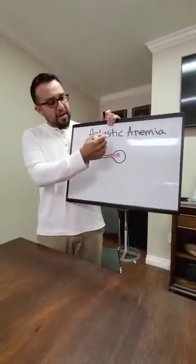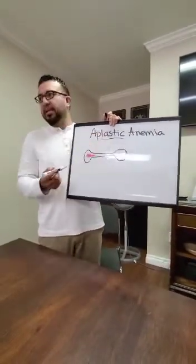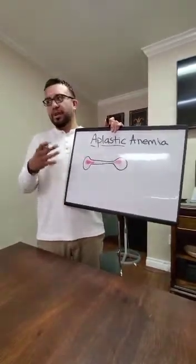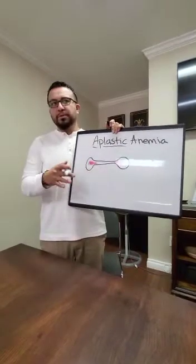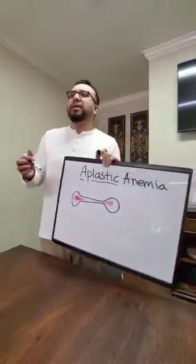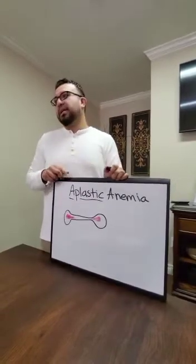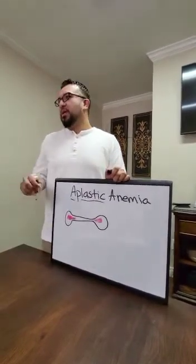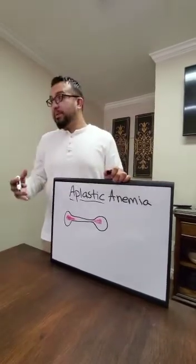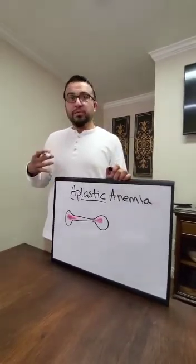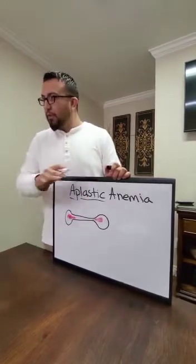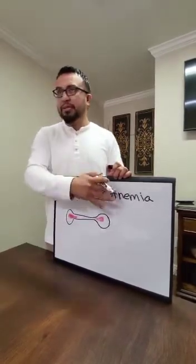Aplastic anemia — 'aplastic' refers to cell division, and 'a' means without. So this is a condition where, for whatever reason, your bone marrow stops producing your cells. It can be caused by certain drugs like chemotherapy drugs, methotrexate, exposure to chemical toxins, radiation therapy, or even viral issues. In some cases, the immune system starts destroying the bone marrow. All of those scenarios are considered aplastic anemia.